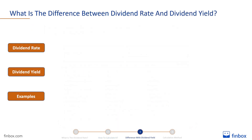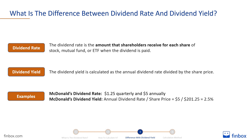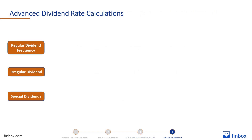Let's check the difference between the dividend rate and dividend yield to make sure everything's clear. The dividend rate is the cash amount that shareholders receive for owning a share of stock, mutual fund, or ETF. The dividend yield is calculated as the annual dividend rate divided by the share price. The dividend rate for McDonald's Corporation is $1.25 quarterly and $5 annually. Since its current share price is $201.25, its dividend yield is 2.5%.